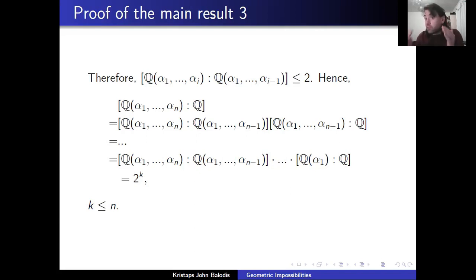And each jump, when you're adding one more α in there, it's either going to be a degree one extension because that α belongs to the base field, or it's a degree two extension. So this product we get at the end here, this is just a product of ones and twos. So it's going to be equal to some power of two, where k is less than or equal to the total number of αs there. Okay, so certainly constructing numbers is definitely going to land us in a degree two field.